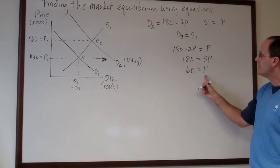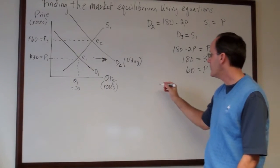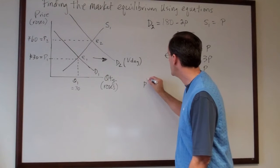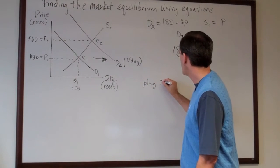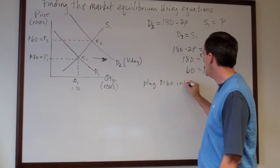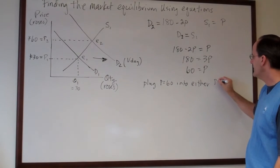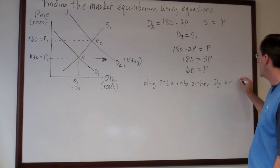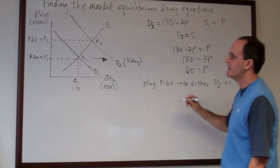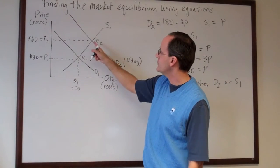Now we're interested as well in trying to determine what the new equilibrium quantity is. So I can do one of the two things I did before. I need to plug price is equal to 60 into either d2 or s1. So d2 intersects s1 right here.